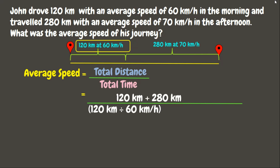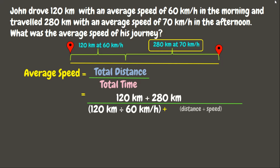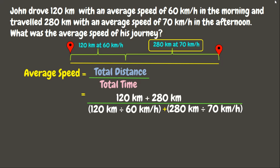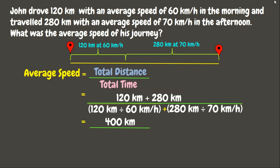Plus our next given: 280 kilometers at 70 kilometers per hour. To solve for its time, we divide the distance by the speed: 280 kilometers divided by 70 kilometers per hour. Now let's solve: 120 plus 280 is 400 kilometers.